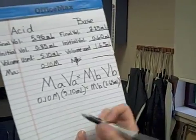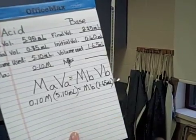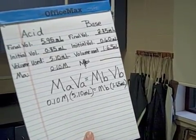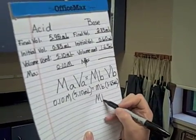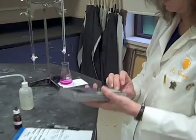Now, algebraically, you're going to multiply 0.1 molar times 5.10 milliliters divided by 1.65 to get your final answer. And I have a calculator here. So, we're going to quickly do that.